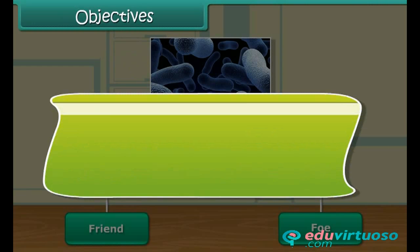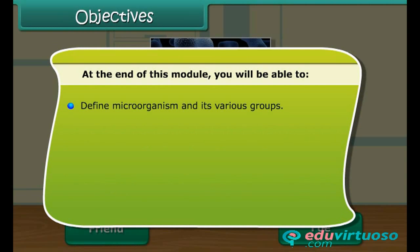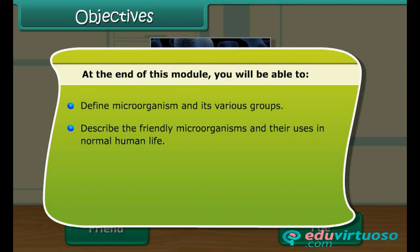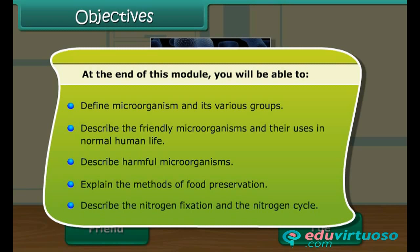Friends, at the end of this module, you will be able to define microorganism and its various groups. You will also be able to describe the friendly microorganisms and their uses in normal human life. Besides, you will be able to describe harmful microorganisms and explain the methods of food preservation. In addition, you will also be able to describe the nitrogen fixation and the nitrogen cycle.